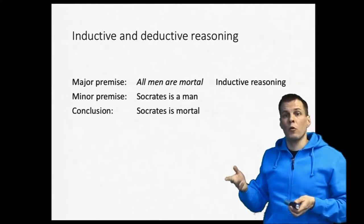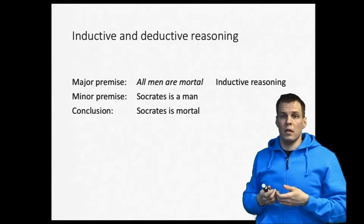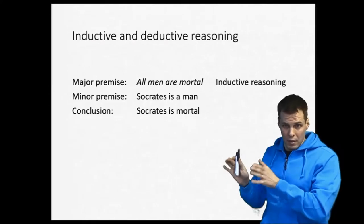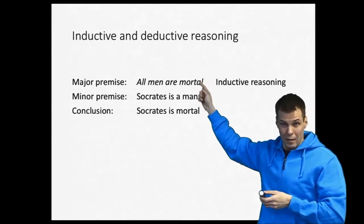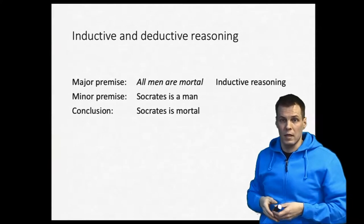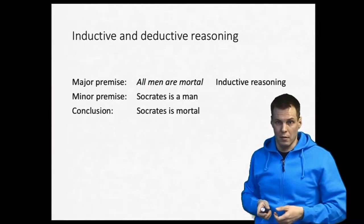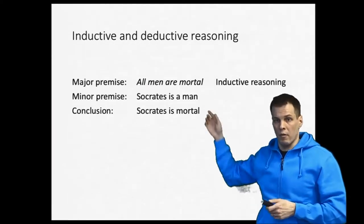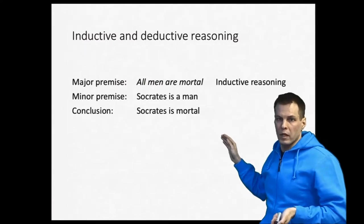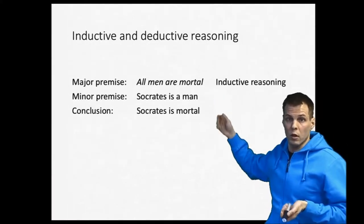Of course, observing that one man is mortal doesn't mean that all men are mortal. The problem of induction is that even if we observe something a thousand times, we can't guarantee we'd observe the same thing the thousand-and-first time. For example, even if all swans you've ever seen are white, it doesn't mean all swans are white — there are actually black swans in Australia. Inductive reasoning is useful, but it doesn't always lead to the correct conclusion.